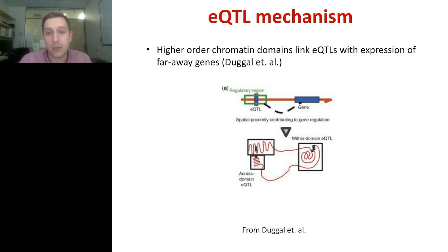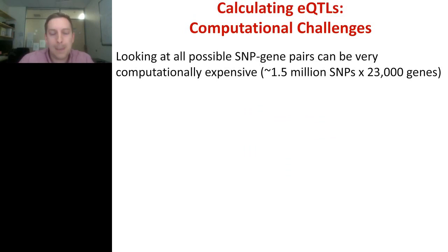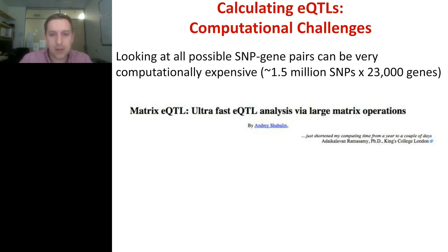One additional problem with trans eQTLs is the computational challenge. For some of the data I'll show later, if you have roughly 1.5 million SNPs and gene expression for 23,000 genes, that's a huge number of association tests if you want to look at all possible SNP-gene pairs — roughly eight hours to run on one of the clusters here at Dana-Farber. However, there was a paper by Andre Chablon providing a package in R called matrix eQTL, which is a very efficient way to do lots of eQTL analysis via large matrix operations. We used that for this project and found it very easy to use — highly recommended. There's a quote from a satisfied customer at King's College London saying it shortened computing time from a year to a couple of days.